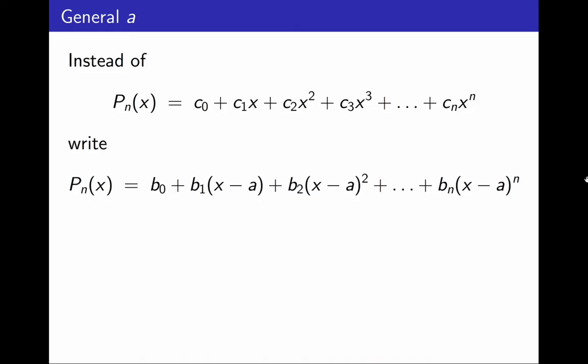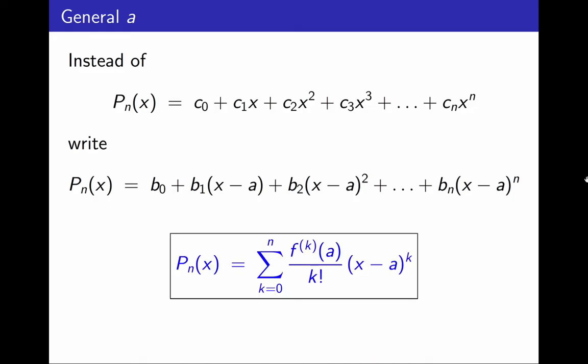I'm skipping the calculations. To clarify, I'm not claiming this is obvious. Take the time you need to convince yourself of the result. If you impose the same conditions as before, but at a rather than at 0, you will get this formula for the Taylor polynomial.